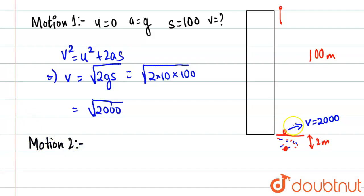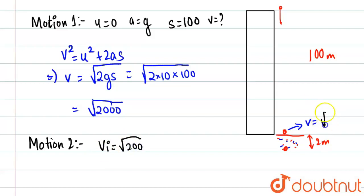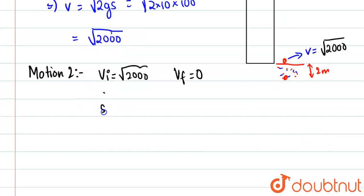Motion two is when the stone hits the ground and decelerates due to the sand. In motion two, the initial velocity u equals √2000, the final velocity v equals 0, and s equals 2 meters. We need to find the acceleration.